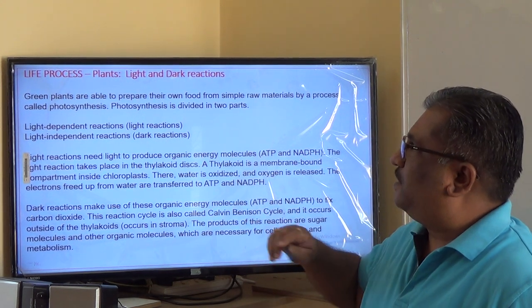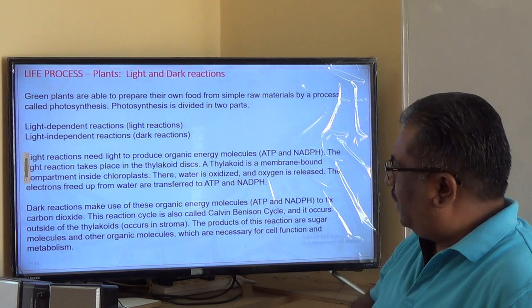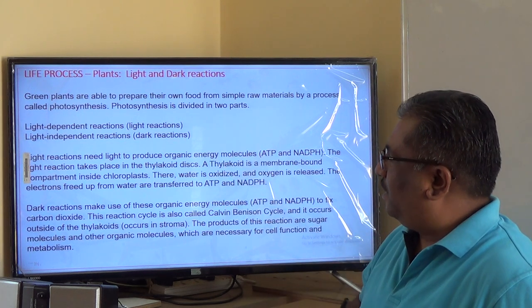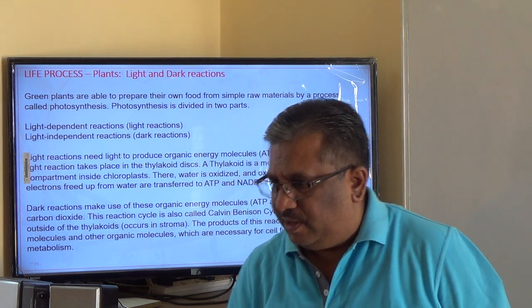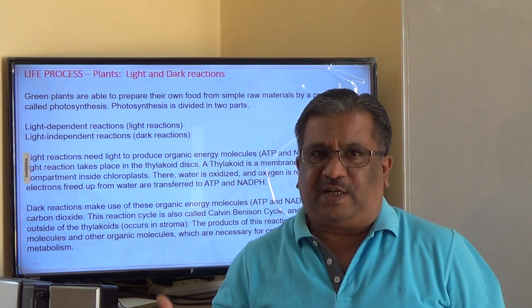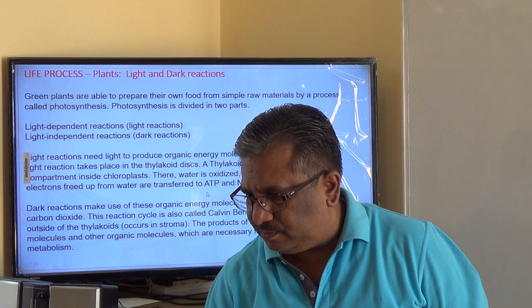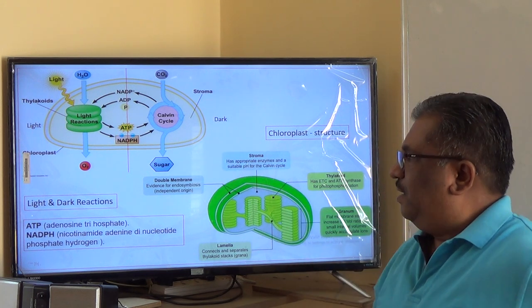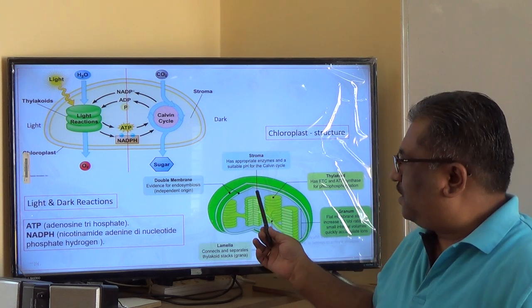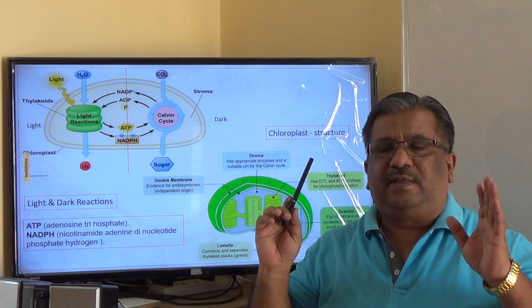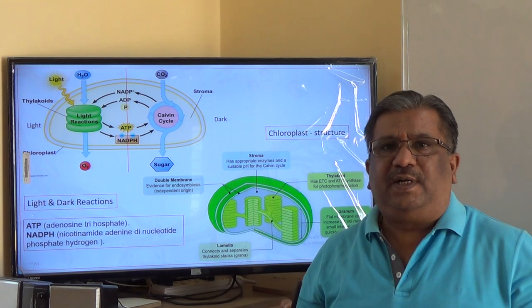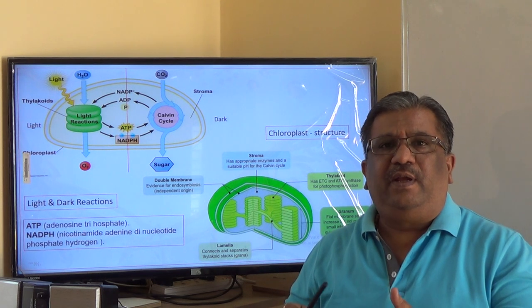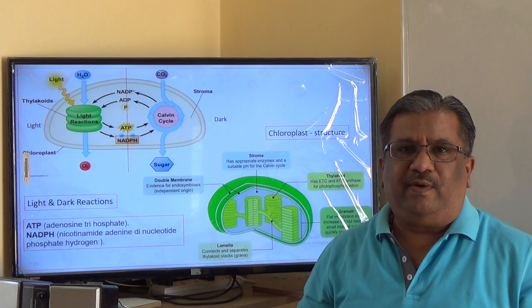Now let us look at the chloroplast structure and discuss light reactions and dark reactions. We will write the photosynthesis reaction and respiration reaction and compare the products and gases released. The chloroplast is a double membrane-bound cell organelle containing plastids where the green pigment chlorophyll is found.